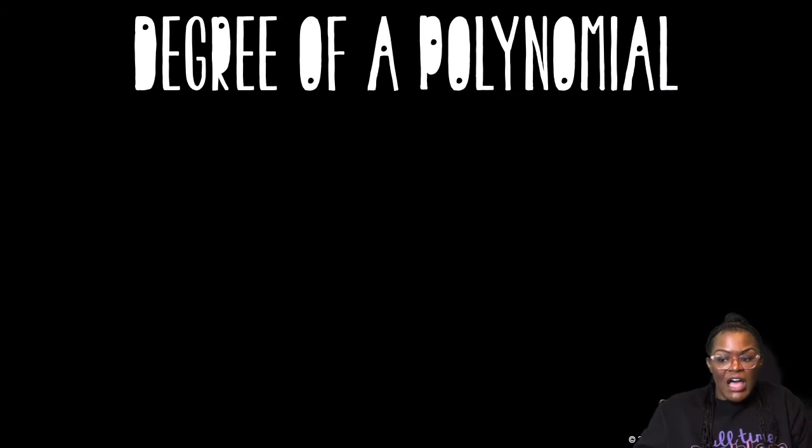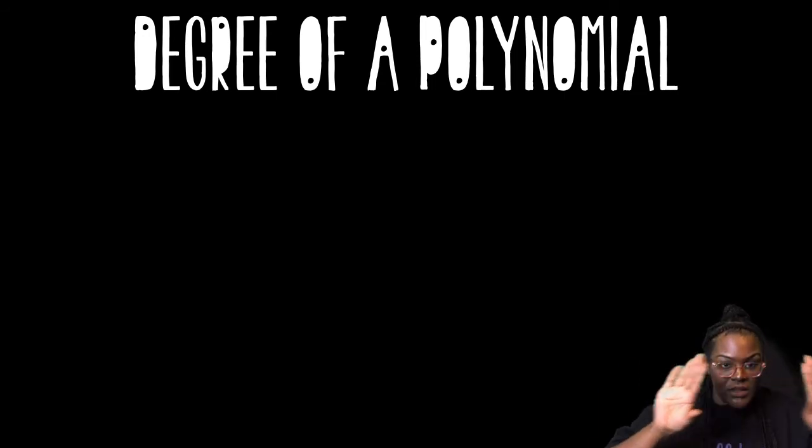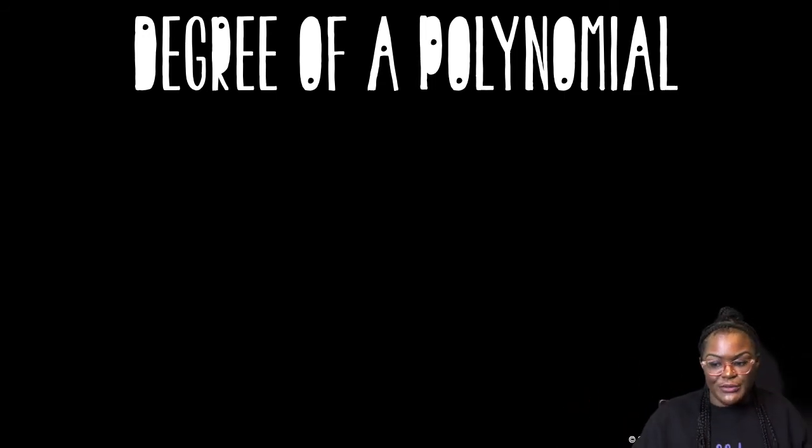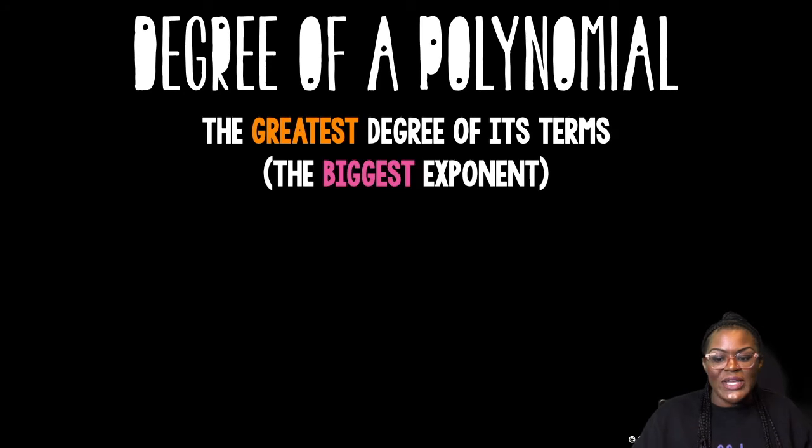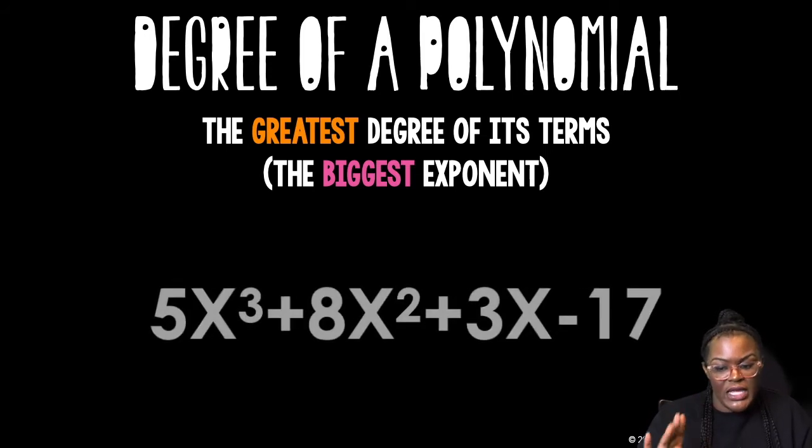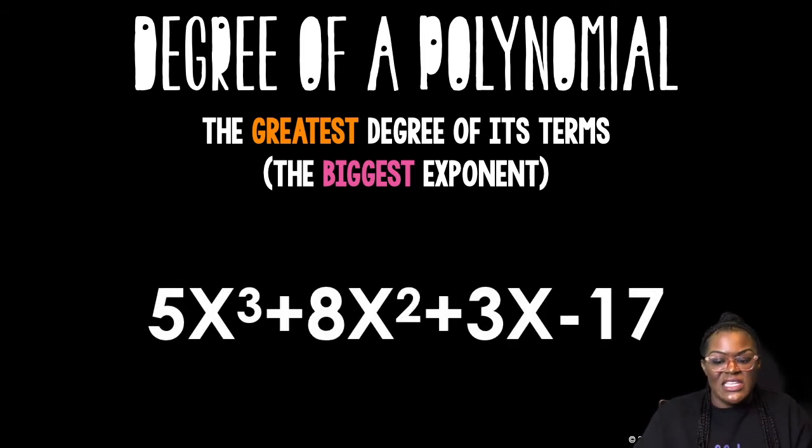The degree of a polynomial. So we talked about the degree of a monomial. Now we're going to talk about the degree of a polynomial. So it is the greatest degree of its terms. So out of all of the monomials that make up this polynomial, which one has the highest degree? The biggest exponent is a shortcut. So this one's easy.